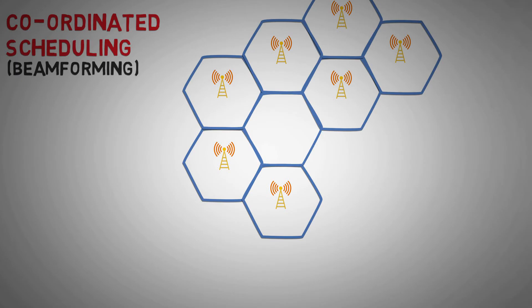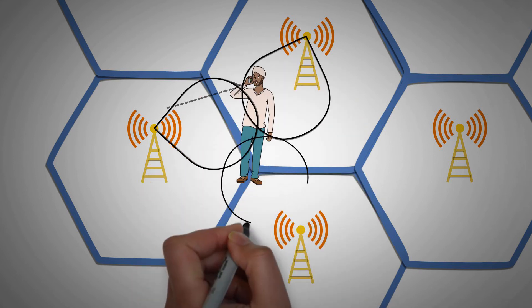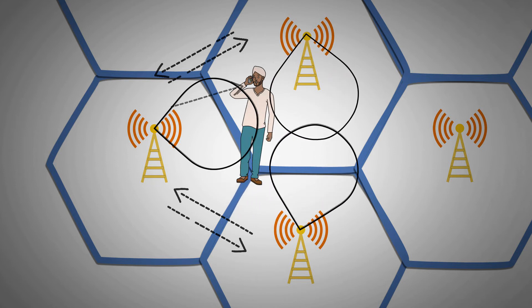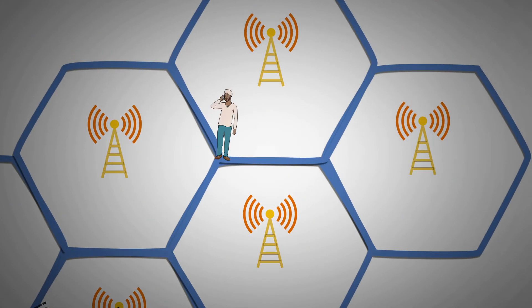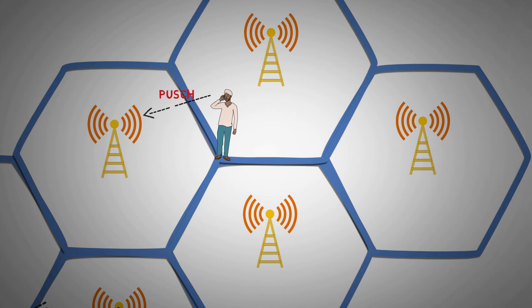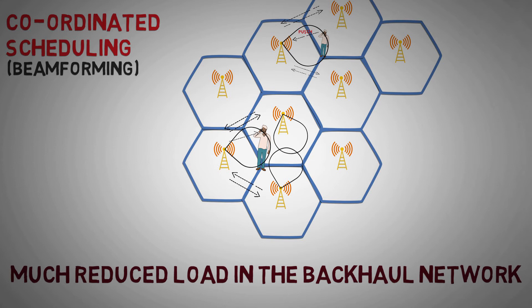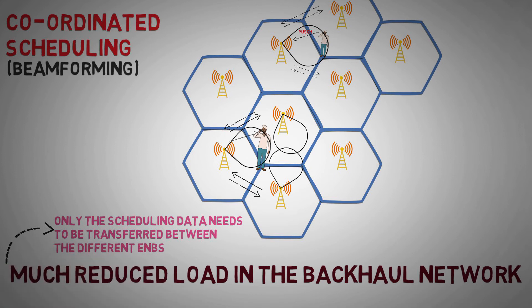The second method is called Coordinated Scheduling or Beamforming. In this case, data to a single UE is transmitted from one eNodeB. For downlink, transmit beamforming weights are generated, and based on them, the scheduling decisions as well as any beams are coordinated to reduce unnecessary interference from other cells. As a result, cell edge user throughput can be improved due to the increase in resistance. In uplink, the UE transmits the physical uplink shared channel using a resource block to a single cell, and the scheduling decision is based on coordination among the cells. This format provides a much reduced load on the backhaul network because only the scheduling data needs to be transferred between the coordinating eNodeBs.